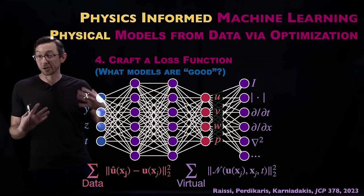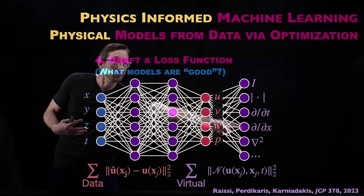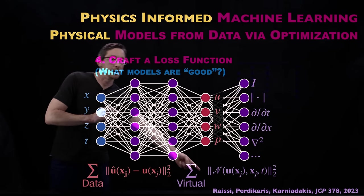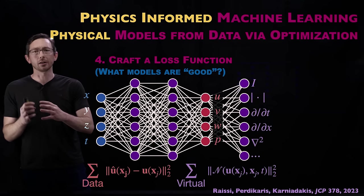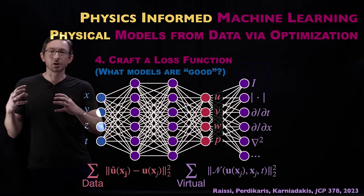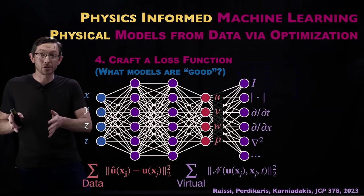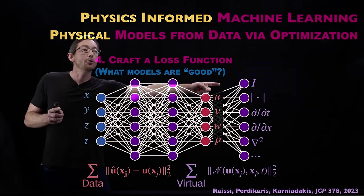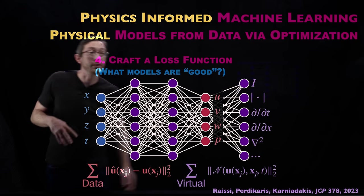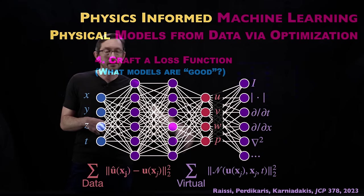If we're working with a fluid flow field, these should be satisfying the Navier-Stokes equations, which is a partial differential equation in these variables. So PINNs adds an extra loss function that essentially says: how much is the governing physical equation — the PDE that governs the physics — violated on the data or on some virtual test points based on these quantities?